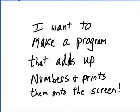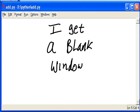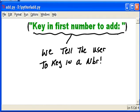I want to make a program that adds up numbers and prints them onto the screen. So I go to the Python shell and I click on Edit, then New Window. I get a blank window.